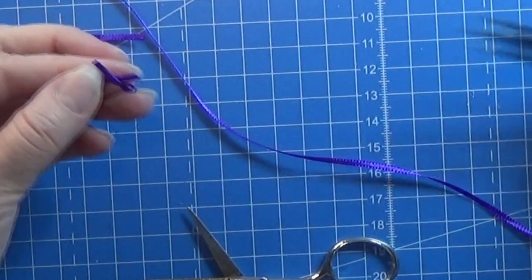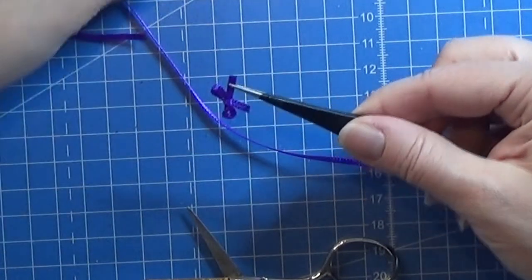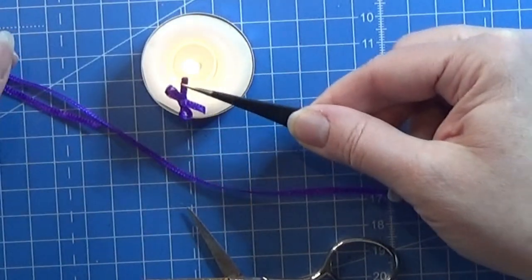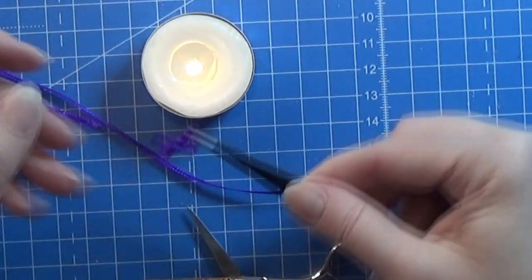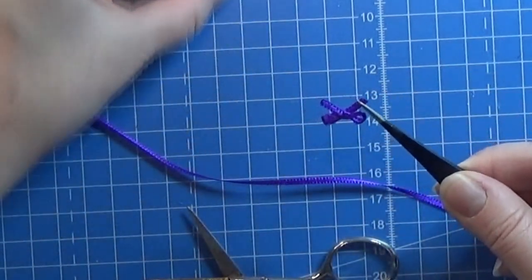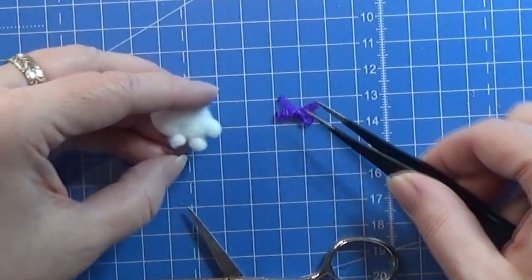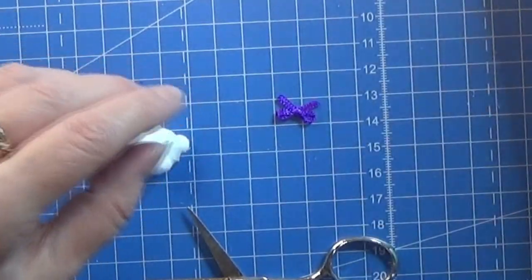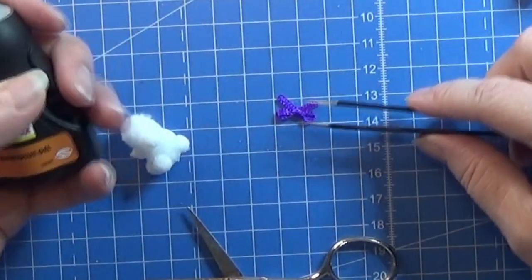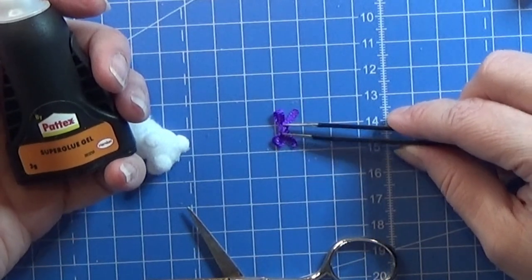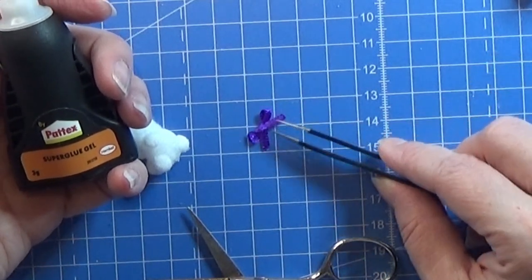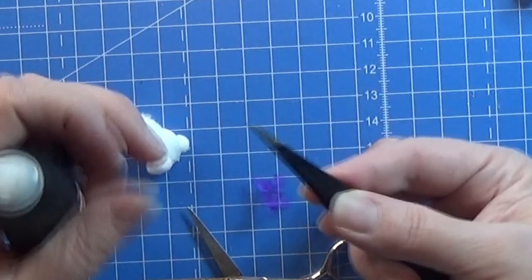And because this is a nylon ribbon I can take this end piece and I can slightly burn it, melt the strings down so it won't unravel in the ends. Now I just take this little bow, some super glue gel here and I'm just gluing this little tiny bow onto the teddy bear.